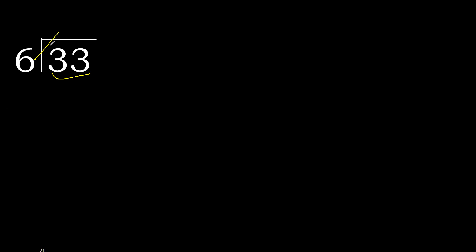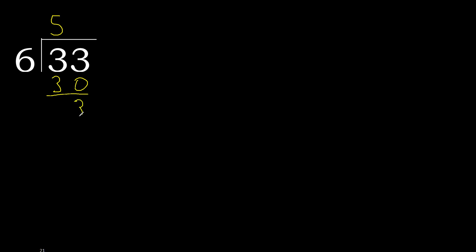6 multiplied by 7 is greater — that's 42. Multiply by 6: 36, still greater. Multiply by 5: 30 — that is not greater. So 33 minus 30 is 3.